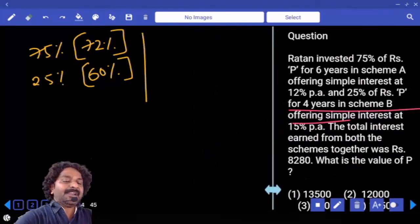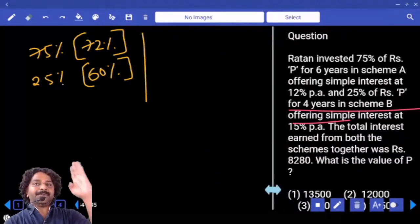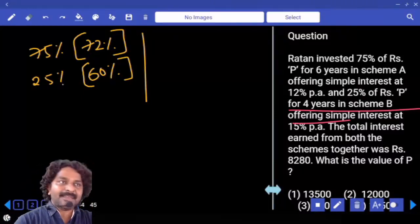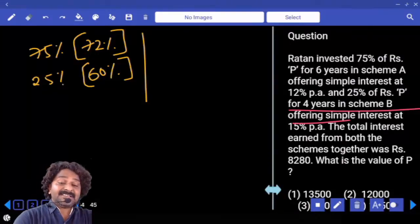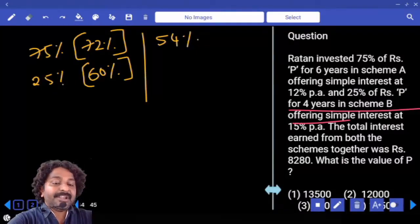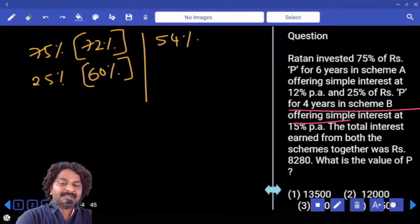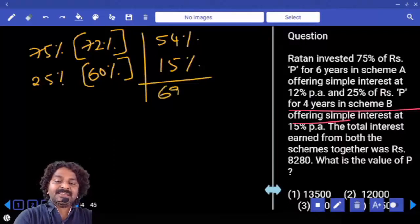Total interest obtained is the sum of these two numbers only. 75% of 72, half plus half, ok what is half? 36, again half, 36, 18. 25% of 60, 15. Then what is total interest obtained? 60. Now...